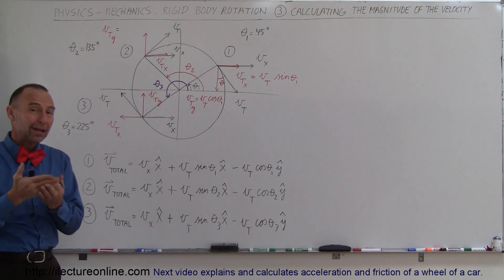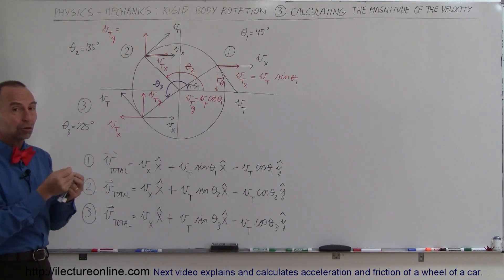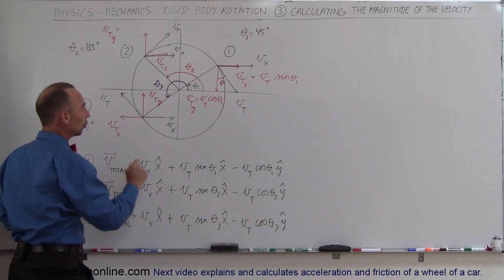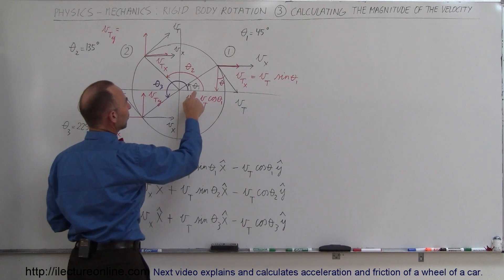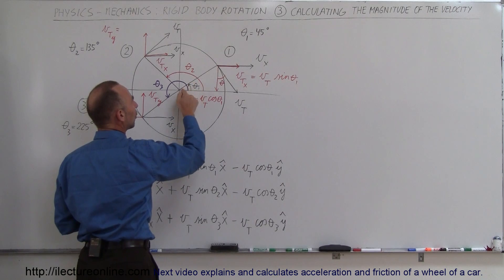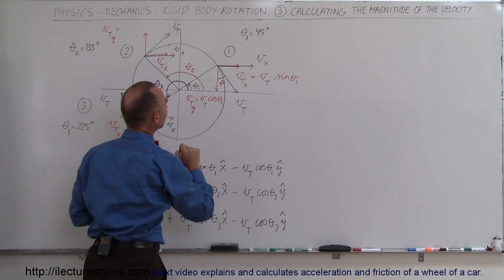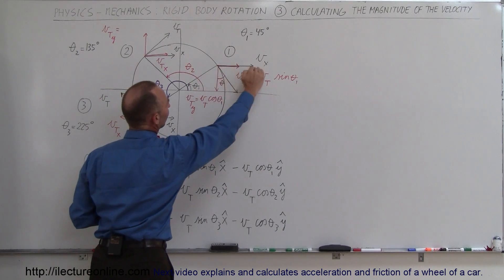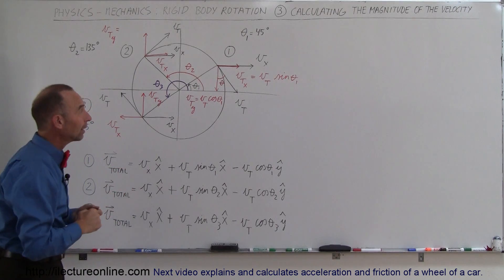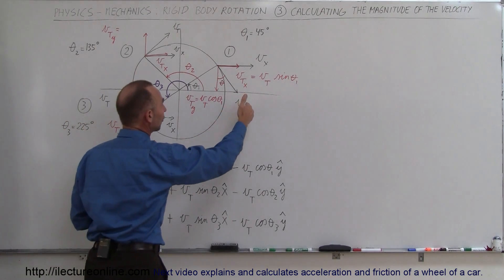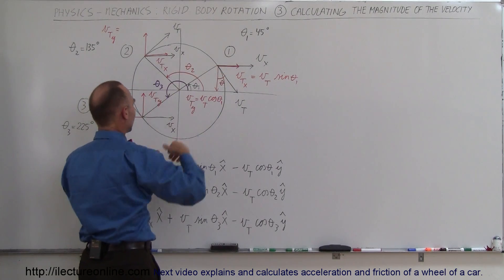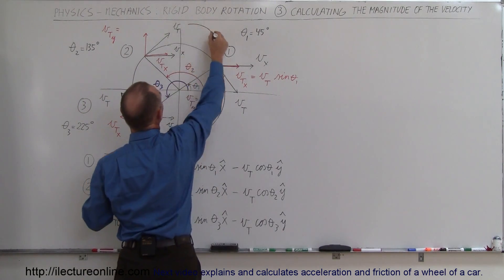In order to find the magnitude, we have to find the individual components of the velocity. There will always be an x and a y component if we consider this to be in the xy plane. Looking at the first example where we have a particle on the tire at a 45-degree angle above the horizontal. At that point, we have a translational velocity in the x direction — the velocity of the car driving to the right — and then the tangential velocity of a particle on the edge of the tire as the tire is rotating.